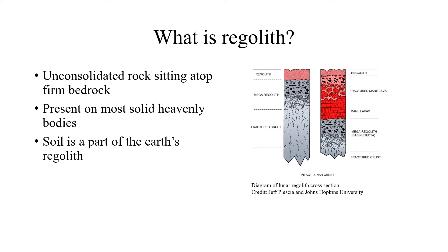On Earth, regolith includes soil and sand, but on other heavenly bodies it consists of many materials as varied as the bedrock it sits upon, as most all regolith was broken off of its bedrock by some form of weathering. Which brings us to our next point.